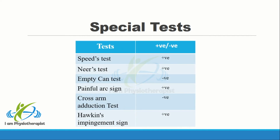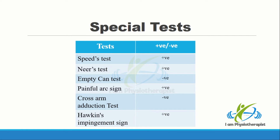Speed test was positive; it is a special test to diagnose bursitis, although other rotator cuff injuries and tendinopathies can also produce pain with this test. Neer's test was positive; it is performed to identify impingement of the rotator cuff, but is also sensitive for subacromial bursitis. Yocum test was negative. Painful arc sign was positive between 70 to 120 degrees of abduction. Cross arm adduction test was negative. Hawkins' impingement sign was negative.